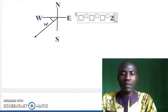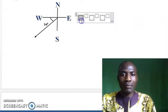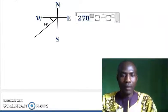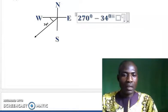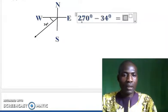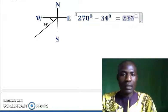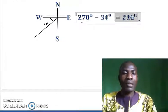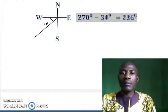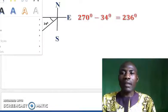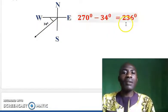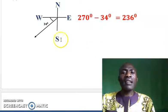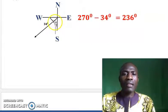So we do 270 degrees minus 34 degrees, and that gives us 236 degrees as our answer. This is how to work out the three-figure bearing when you are given a compass bearing — you can convert it to a three-figure bearing. We converted this by saying 270 minus 34 equals 236 degrees.